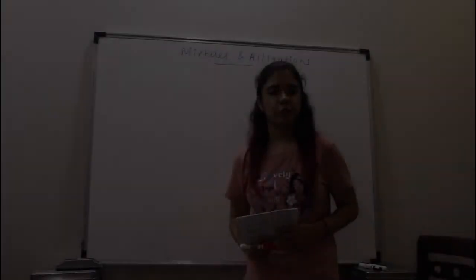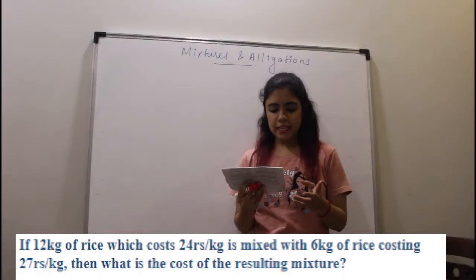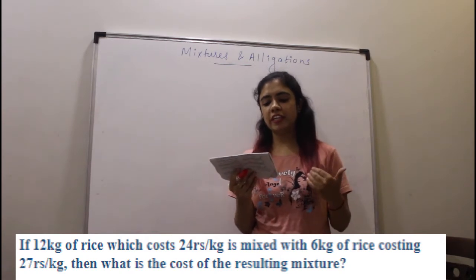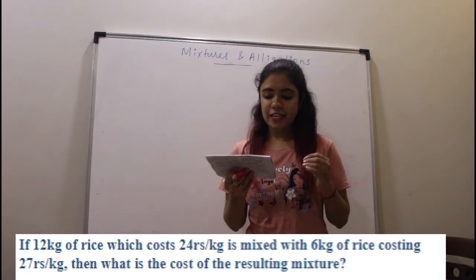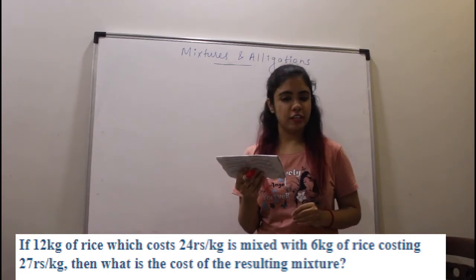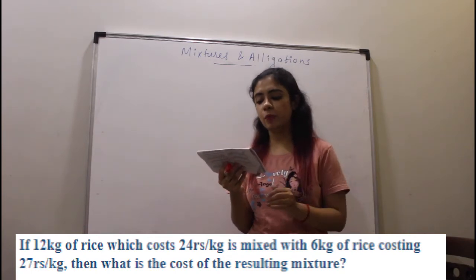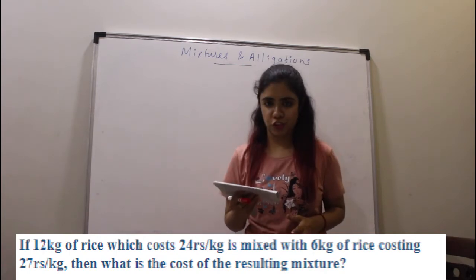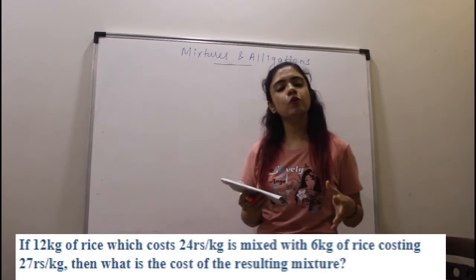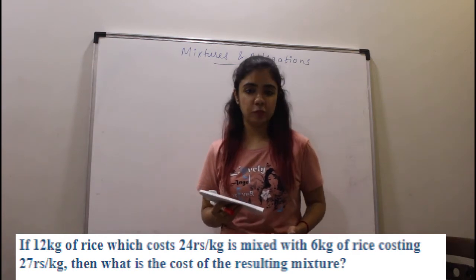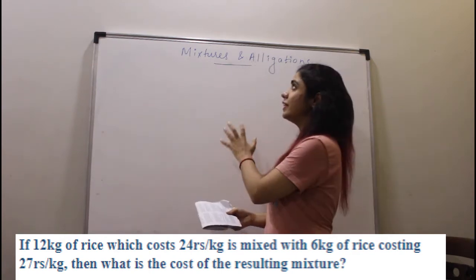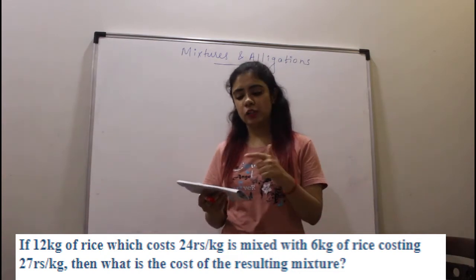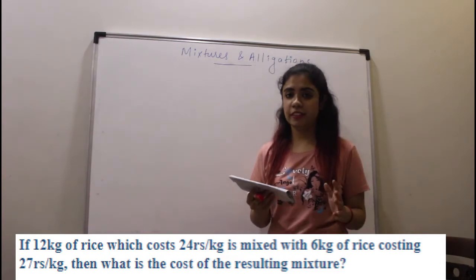Let's look at the next question. If 12 kg of rice which costs 24 rupees per kg is mixed with 6 kg of rice which costs 27 rupees per kg, what is the cost of the resulting mixture? You can solve this by the weighted average method also, but since we are talking about mixtures and allegations, let's try to solve this by the allegation method.